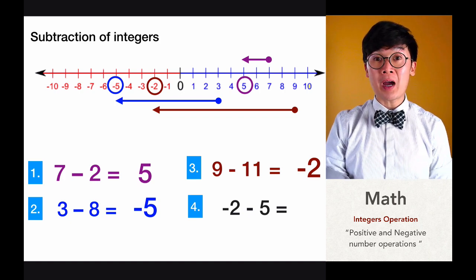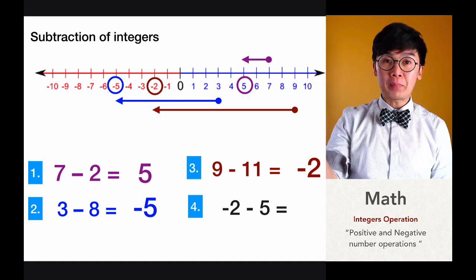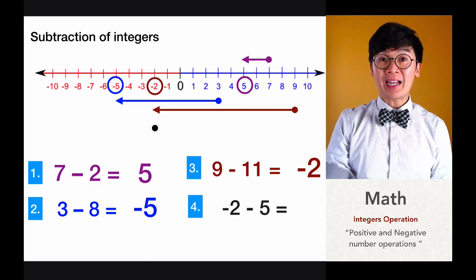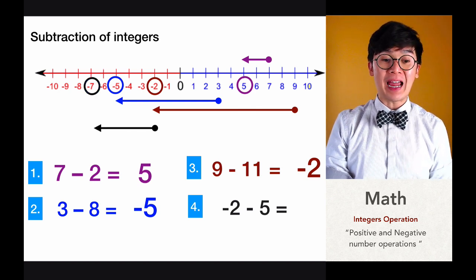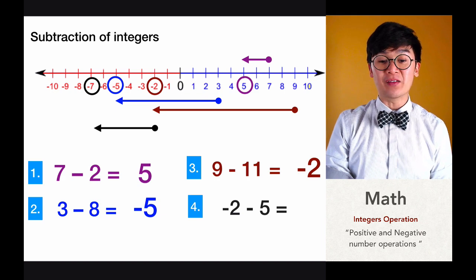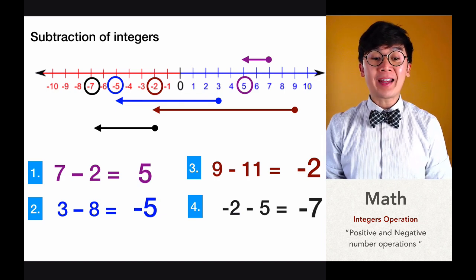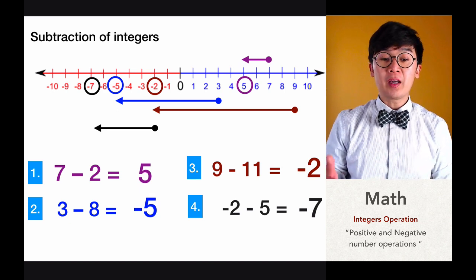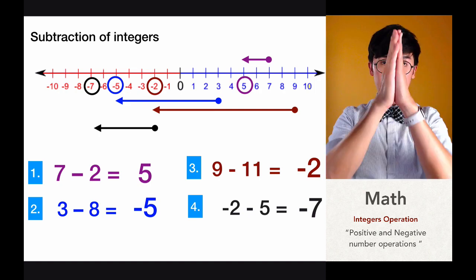For negative 2 minus 5, we start at negative 2 and move 5 units further to the left in the negative direction, ending up at negative 7. That is how you use your number line in subtracting integers — using zero, positive, and negative positions.